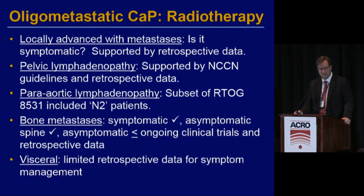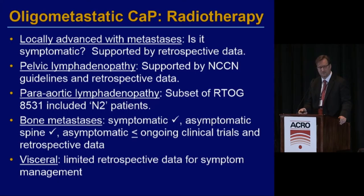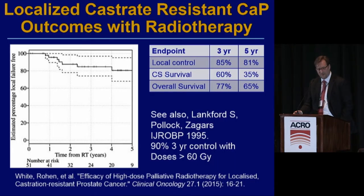Para-aortic lymphadenopathy is moving outside the box, but a subset of RTOG 8531 patients were included with this. Symptomatic bone metastasis is not an issue; asymptomatic spine with epidural disease can be included. Asymptomatic bone metastasis refers to ongoing clinical trials, particularly the NRG clinical trial, and retrospective data. We present these cases in chart rounds as an academic exercise, looking for studies or guidelines justifying treatment in patients who are hormone-naive, giving hormonal therapy with concomitant radiation rather than hormonal therapy alone.